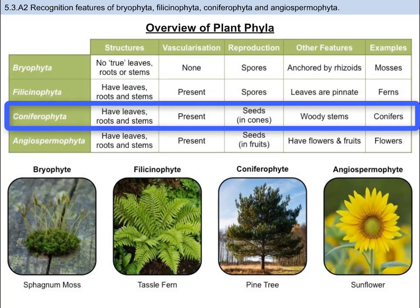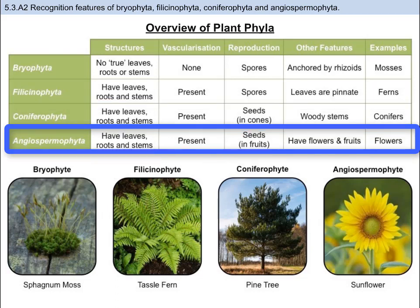Third, we have the Coniferophyta, or coniferophytes. These too have vascularization and have roots and leaves. They also have woody stems. In contrast to bryophytes and ferns, coniferophytes have seeds and store them in cones. Some examples are conifers, like pine trees and cedars.